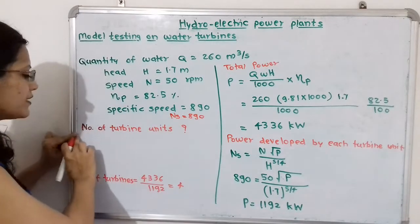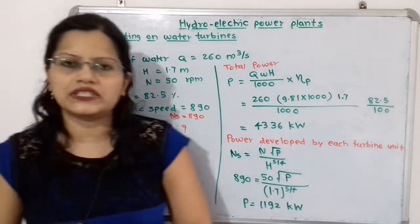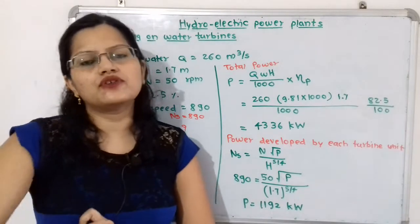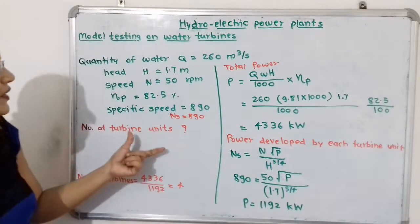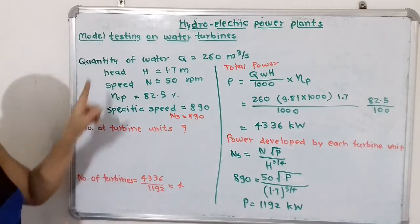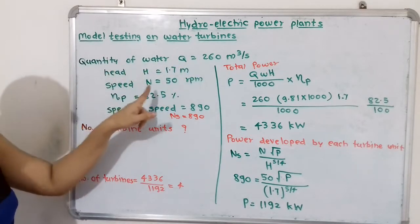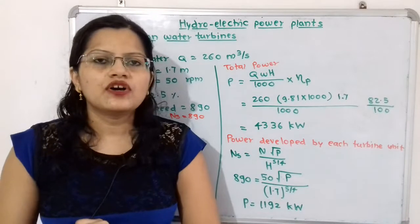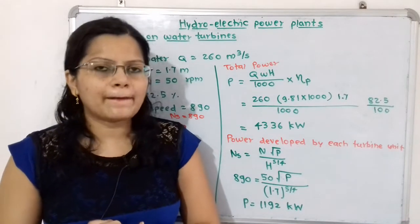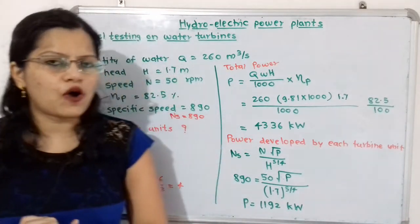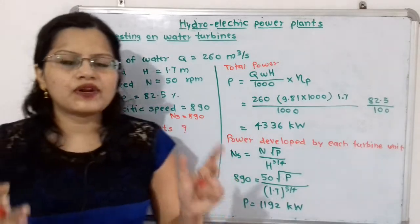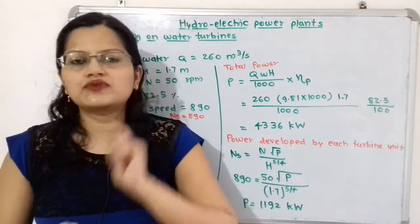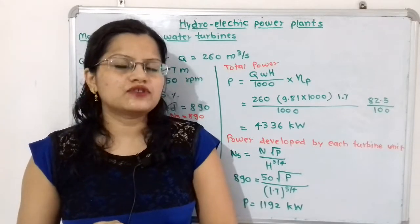We have to find out the number of turbine units. To do this, we need to compare the total power with the power developed by each individual turbine unit. These two points are important.